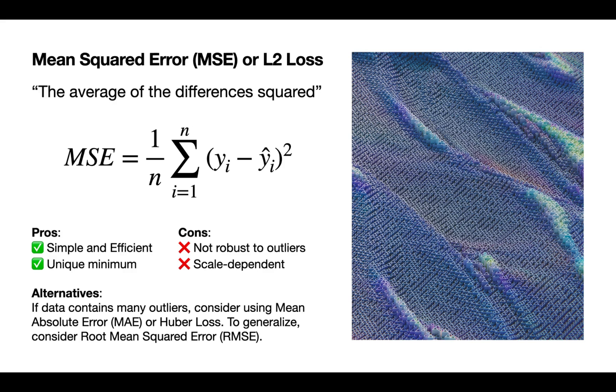Another one you can use if the data contains many outliers is to use the mean absolute error or the Huber loss. And to make it scale independent, you can also consider using a root mean squared error. These are just variations of this one.